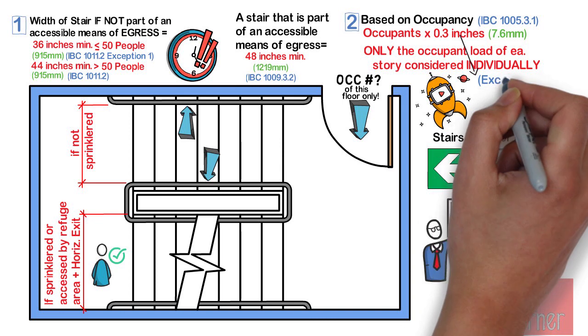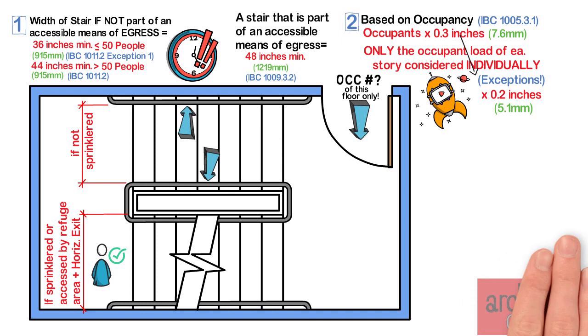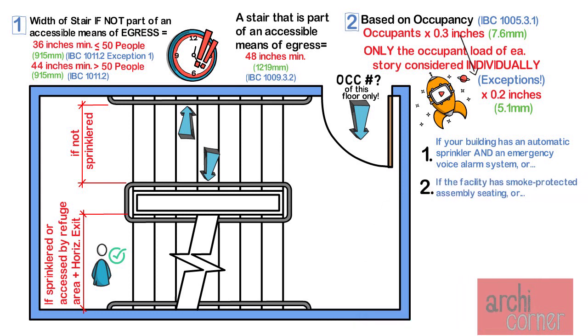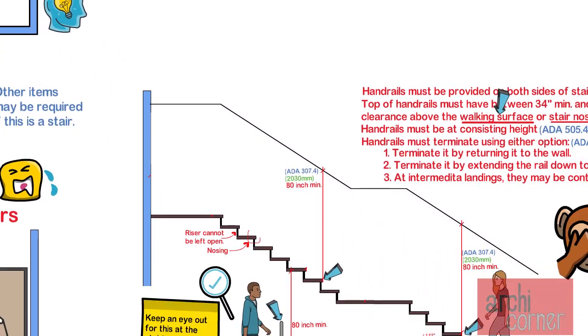There are exceptions to the 0.3 inch factor. Sometimes you can use 0.2 inches. If your building has an automated sprinkler system and has an emergency voice alarm system, or if the facility has smoke protected assembly seating, or if the facility has open air assembly seating. So if any of these describe your facility, look at those exceptions.